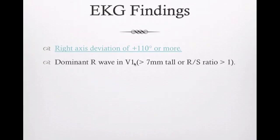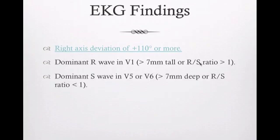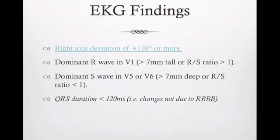Looking at the EKG for right ventricular hypertrophy: the R wave in V1 must be pointing up. Normally the R wave in V1 points down, but an upward deflecting R wave in V1 greater than 7 millimeters tall, or an R/S ratio greater than 1 (R wave large relative to S wave), means start thinking right ventricular hypertrophy. Also look at the S wave in V5 or V6 - if it's 7 millimeters deep, that's criteria for RVH. Keep in mind: if QRS duration is less than 120 milliseconds, the upward V1 R wave is probably not due to a right bundle branch block.